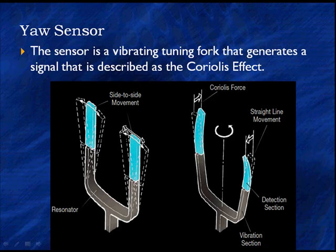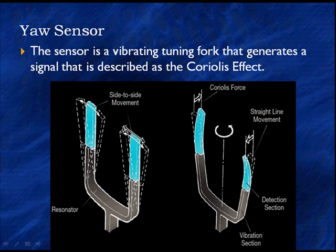Forward and back movement causes the tines to bend forward and back with a twisting action. This is corrected by another sensor on the bottom that offsets this twisting effect. Overall, the mechanism generates a signal that can be described as the Coriolis effect.